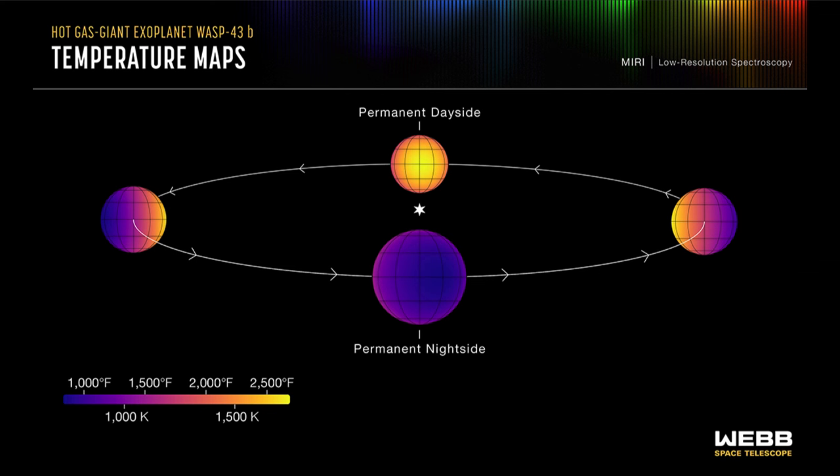The currents within the atmosphere are able to transfer enough heat to keep even the night side, which never sees this star, very hot as well. In fact, hotter than what we see in our own solar system for any of the surfaces of objects that we look at here.